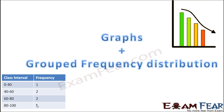Now that we have discussed frequency distribution tables, we will try to make graphs based on these tables. This section is going to be a combination of graphs and grouped frequency distribution. We will learn how to make graphs by looking at grouped frequency distribution tables — so if we are given a table like this, how can we draw a graph like this?